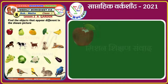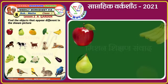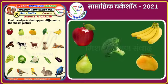Let's see a worksheet. In this picture, we will see an apple, mango, banana, pear, and broccoli. But broccoli is a vegetable. Yes, that is why broccoli will be the odd one out.